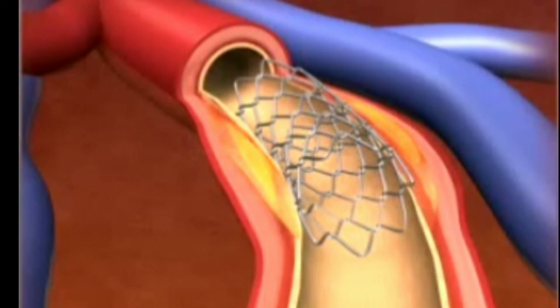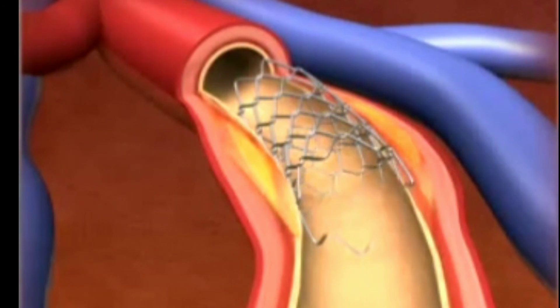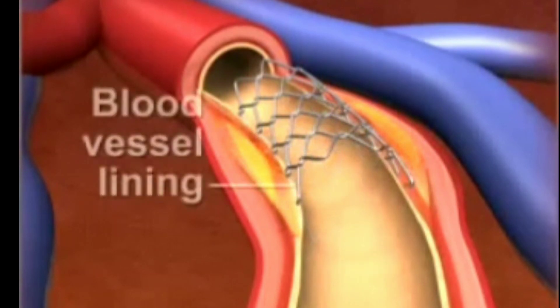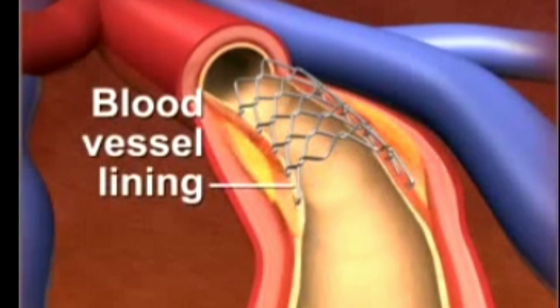The stent may prevent re-narrowing after an artery is widened, and it stays in place permanently as the blood vessel lining heals over it.